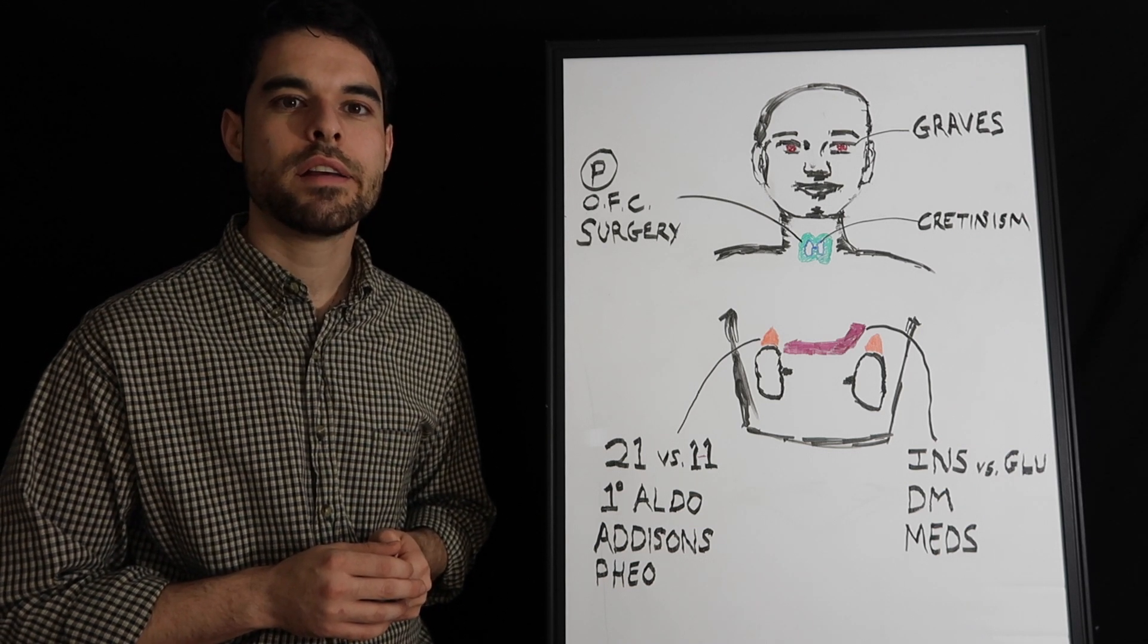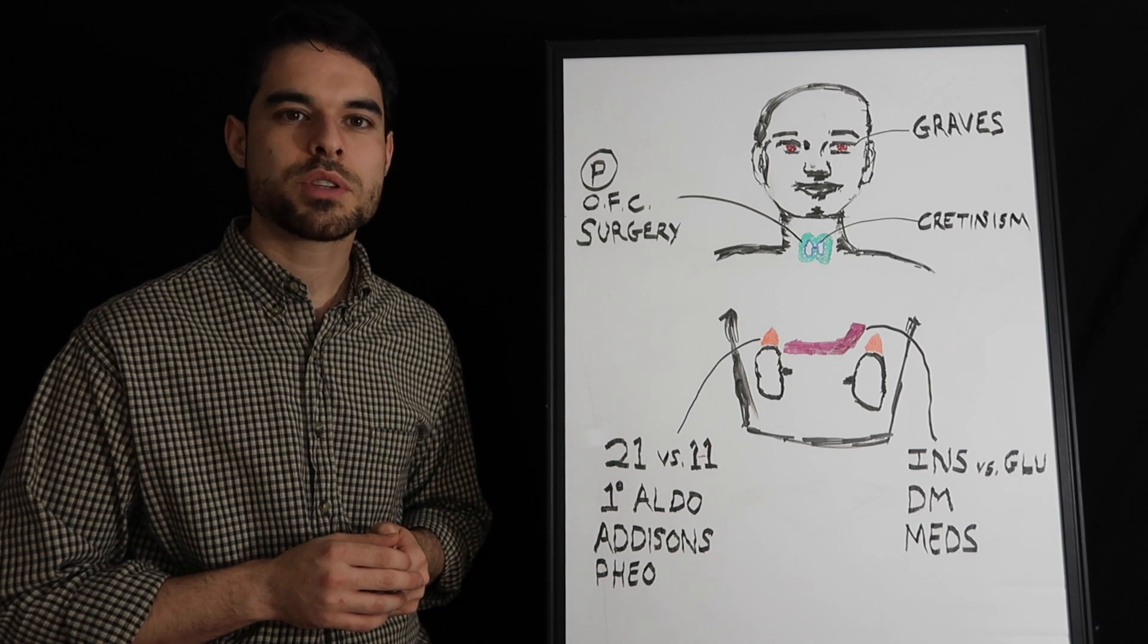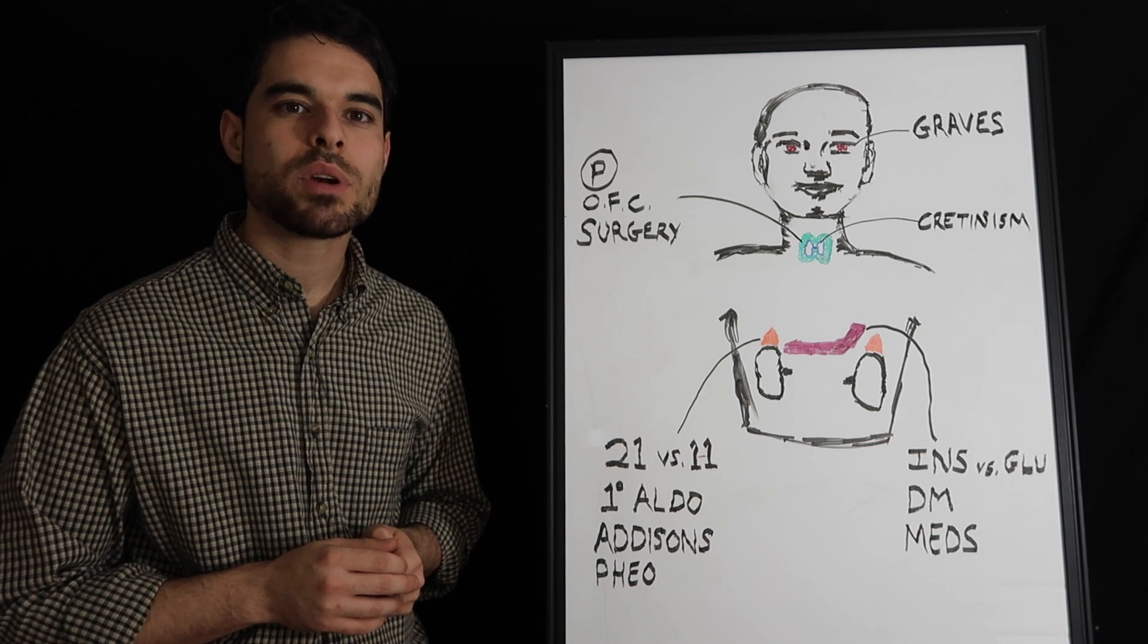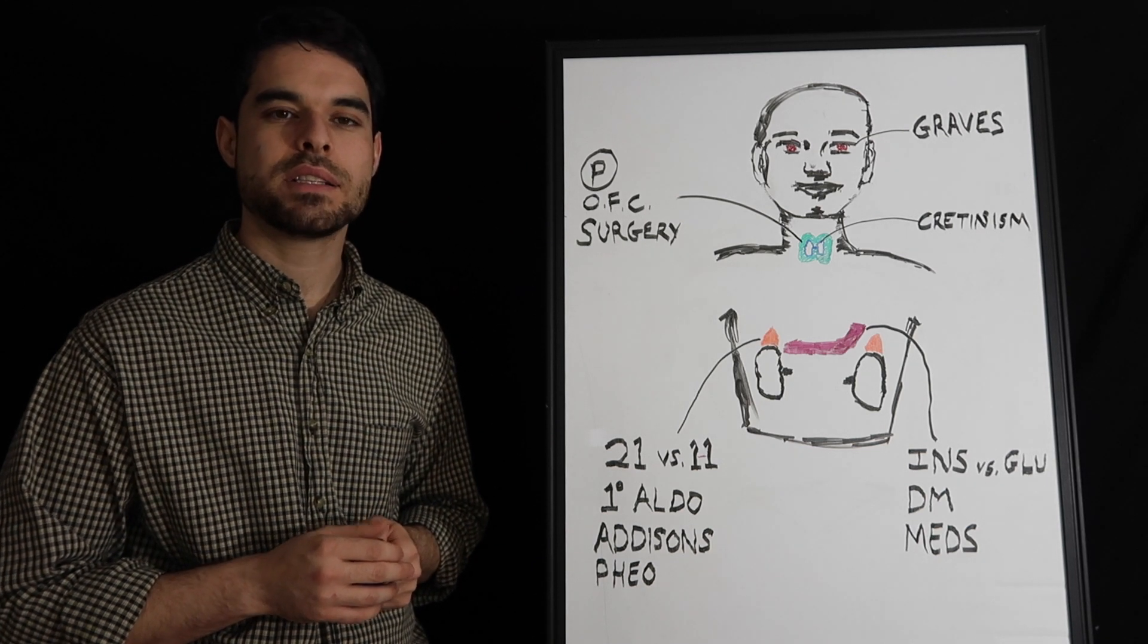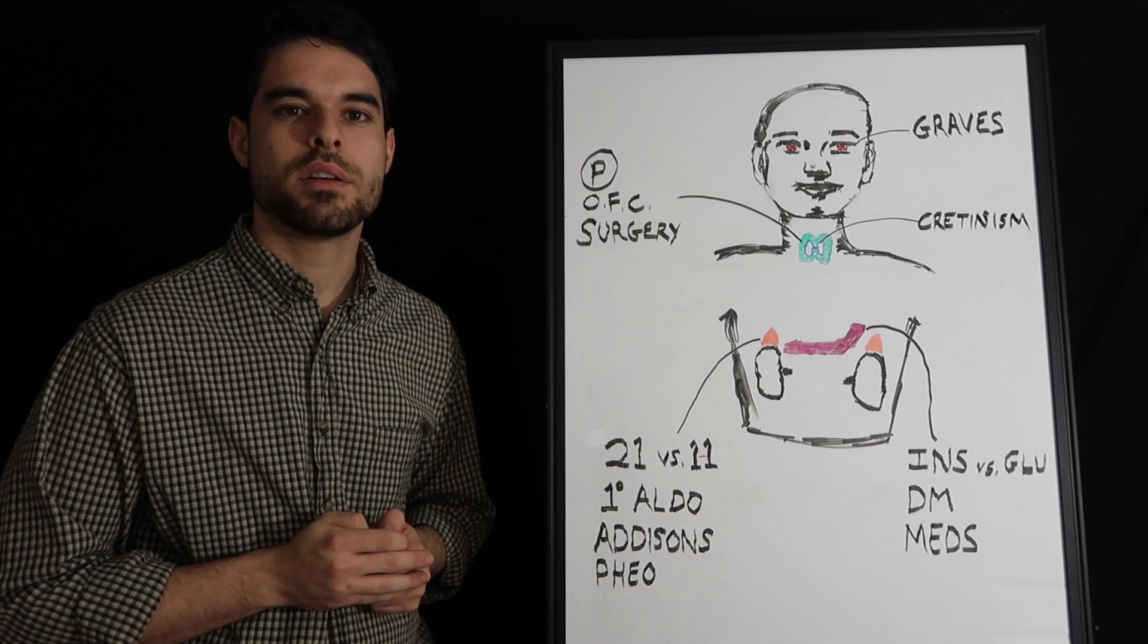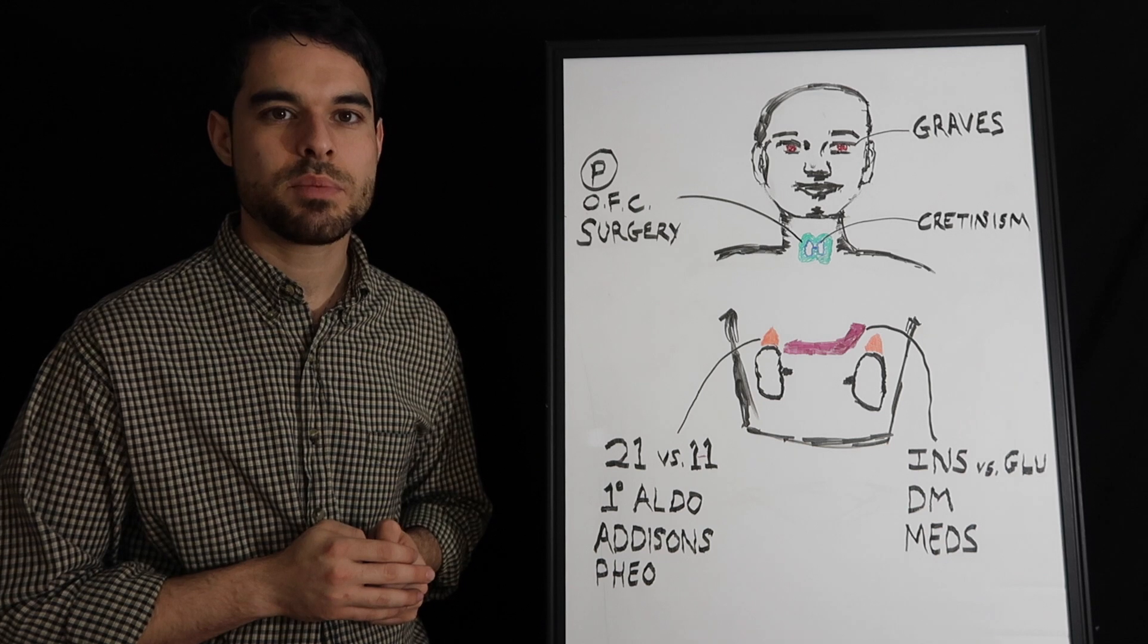After metformin is the sulfonylureas. I imagine the sulfonylureas, like someone surfing the entire day, these are going to be the long acting ones. And what's important to know about that is if you miss a meal, you can become hypoglycemic. So an older person who maybe misses meals, this is not a medication to put them on.